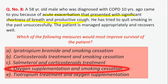Ipratropium bromide has been shown to improve symptoms and produce acute improvement of FEV1 in COPD but has not been shown to improve survival. Corticosteroids are useful in treating COPD symptom flare-ups by reducing airway inflammation but have not shown improved survival. Salmeterol and corticosteroid treatment also did not show improved survival. Tiotropium and oxygen supplementation alone would not be best — only oxygen supplementation and smoking cessation have been proven to improve survival.